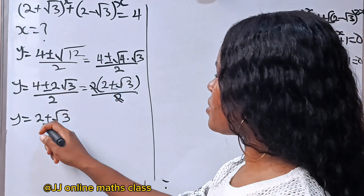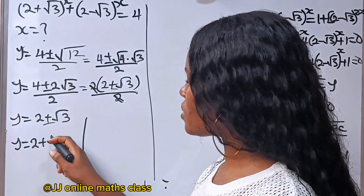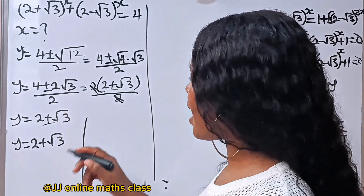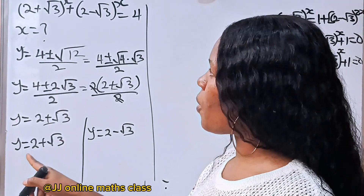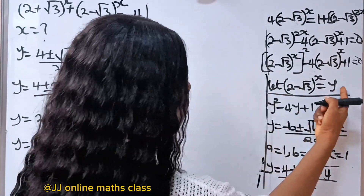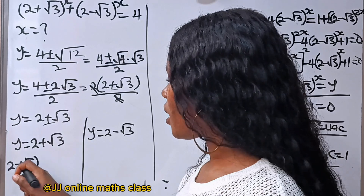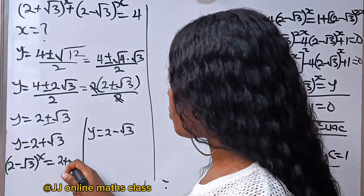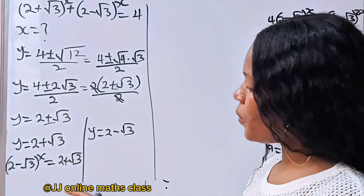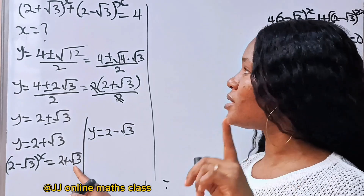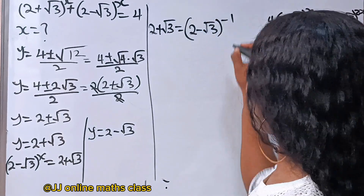We have two values of y. The first is y equal to 2 plus root 3, and the second is y equal to 2 minus root 3. Recall that we showed earlier that 2 plus root 3 is equal to 2 minus root 3 raised to the power of minus 1. So for the first case, 2 minus root 3 to the power of x equals 2 plus root 3, which equals 2 minus root 3 to the power of minus 1.